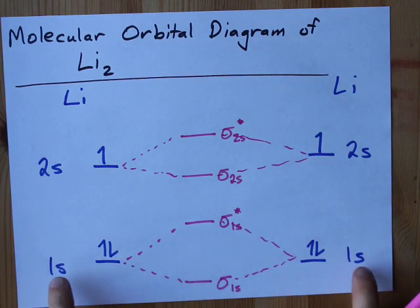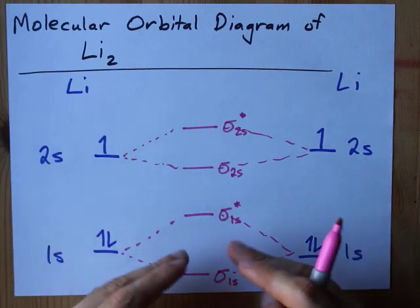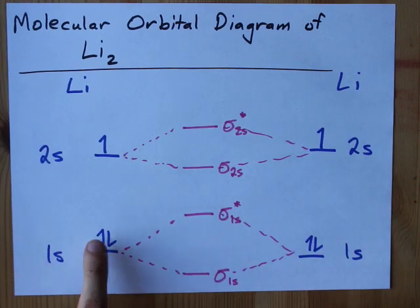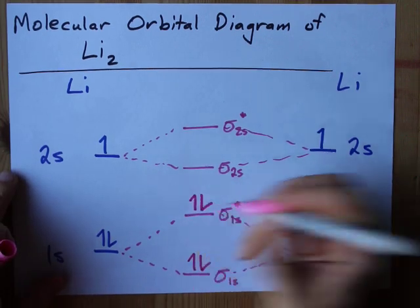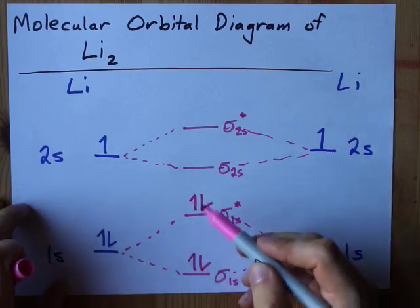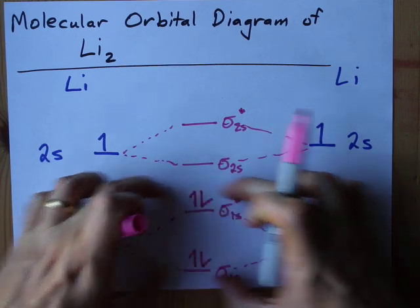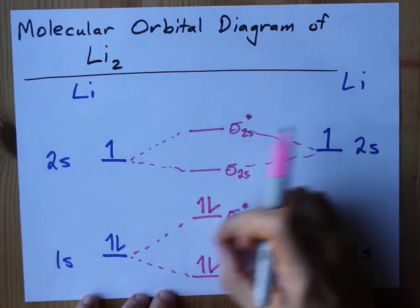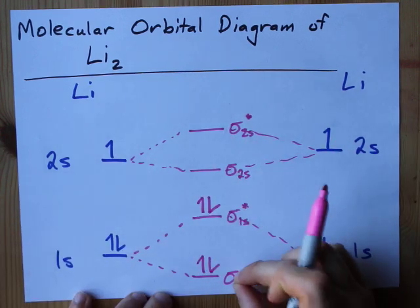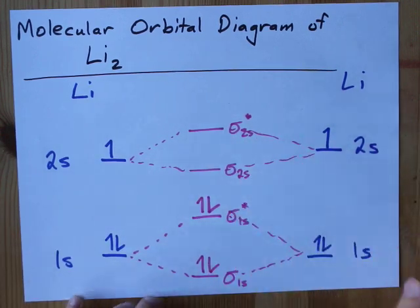Now among the 1s orbitals that are combining to make these molecular orbitals, I have 1, 2, 3, 4 electrons total, so 1, 2, 3, 4 electrons fill that. Those were actually inner-shell electrons, so it's probably no surprise that it's a wash down here. Two electrons in bonding orbitals and two in antibonding orbitals.